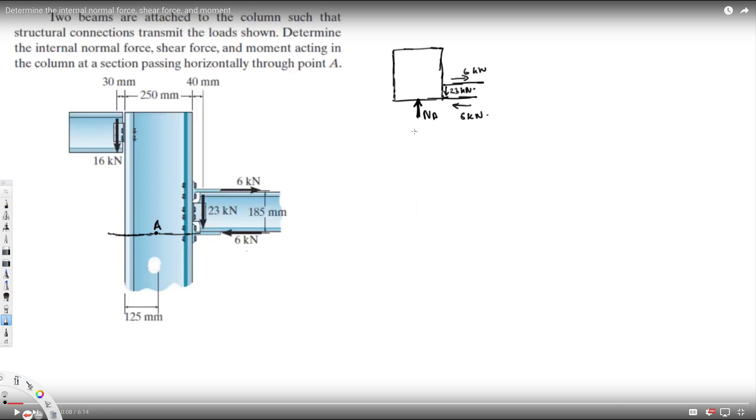Also we are going to have the shear force in this direction, so we assume this is the direction. This is shear force, and also we have a 16 kilonewton acting downside.